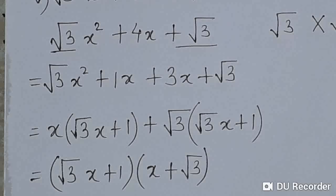After solving, the factors of the polynomial √3x² + 4x + √3 are (√3x + 1) and (x + √3). This was practice set 3.6, question number 1: find the factors of polynomials. Hope you like the video — we will meet again in the next video very soon. Till then, goodbye!